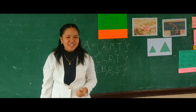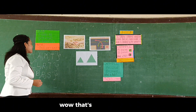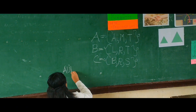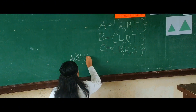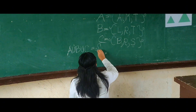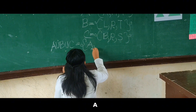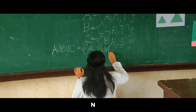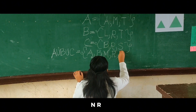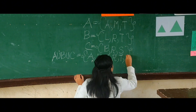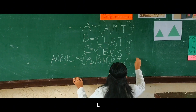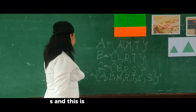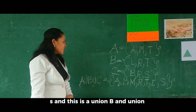Yes, guys! Wow, that's exactly correct. A union B union C = {A, B, M, R, T, L, S}. And this is A union B union C.